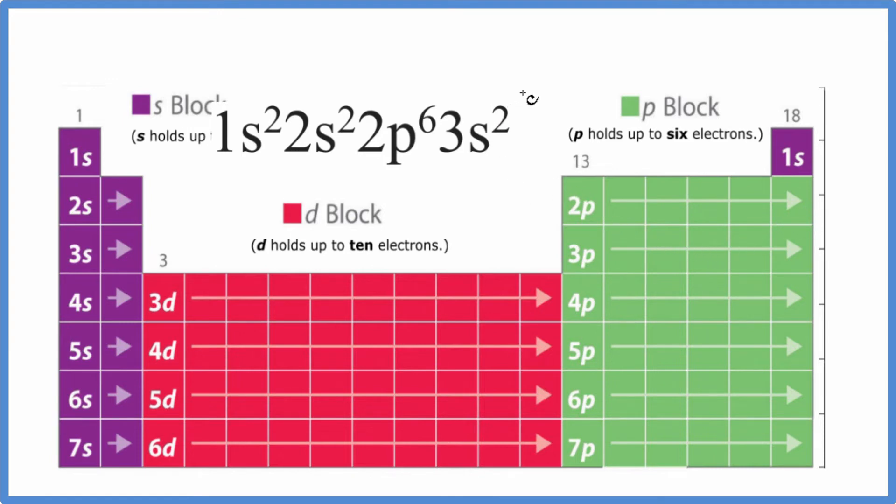So we're looking at something that ends in 3s². We go down 1, 2, 3. Here's s¹, and here's s².